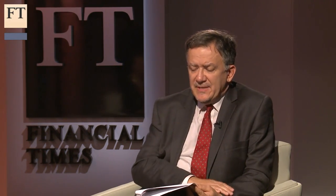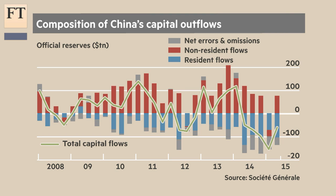Now let's try to look at this in more detail because this is very important. What we're looking at here is the composition of China's capital outflows. Some of these measures might not be familiar to everyone. We have net errors and omissions, non-resident flows. What is happening in this chart? How does this all add up to the total capital flows that we see?